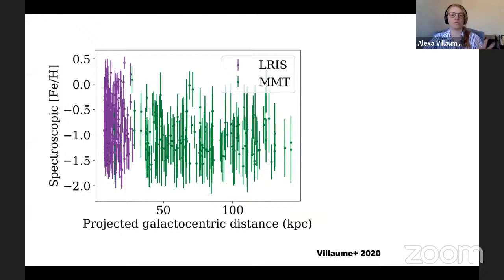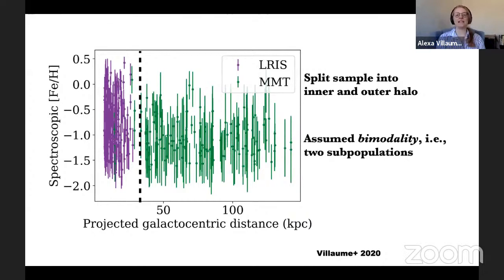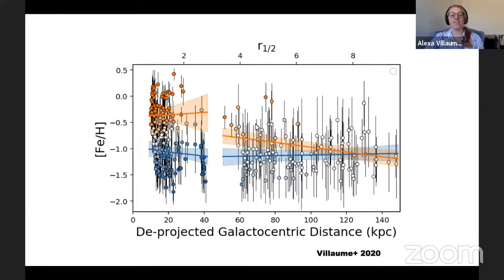Going back to the measurement plot — taking the M87 GC data and fitting with that model, I first split the sample into an inner halo and outer halo, still assuming bimodality (two subpopulations). I'm now looking at metallicity versus de-projected radius, with uncertainty in the x-direction. I'm showing the best fit and one-sigma uncertainty on all the inferred gradients. Points are colored by the subpopulation they were assigned to, and their opacity reflects the uncertainty of that subpopulation measurement — so we're not just making a binary cut, we actually get uncertainties on subpopulation measurements that we can propagate into our analysis.